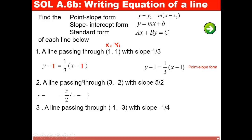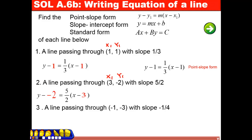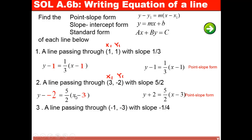The second problem: I set up the point-slope form, label x₁ and y₁, and replace slope by 5/2. Y₁ is equal to negative 2 and x₁ is equal to 3. Since I have a double negative when substituting y₁, it simplifies to positive 2. So the point-slope form becomes y plus 2 equals 5/2 times x minus 3.